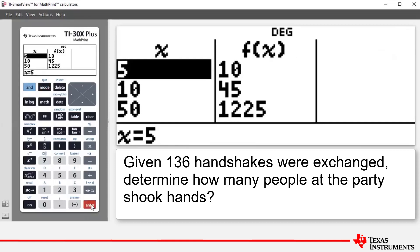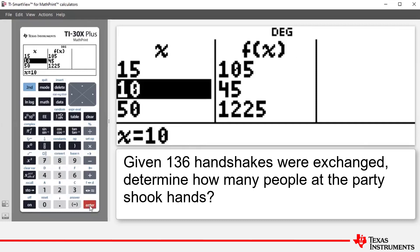So we want to determine the value of x such that n(x), and I know the calculator says f(x), is 136. So let's add a guess. Let's add 15 and press enter, and notice that we get an updated answer of 105. So we need to increase x again. Let's try 16, press enter and we get 120. So we're not far away.